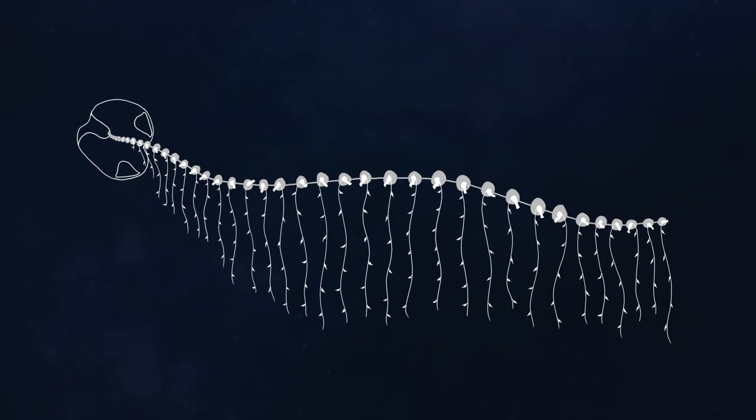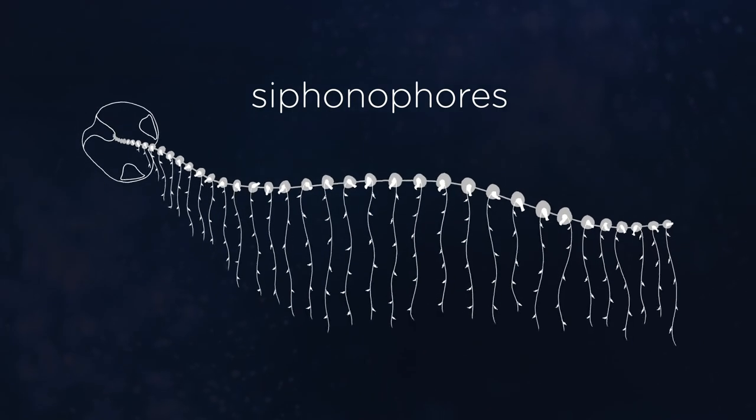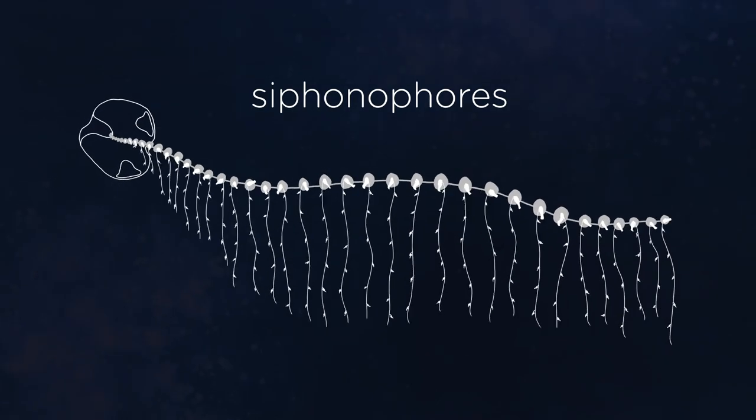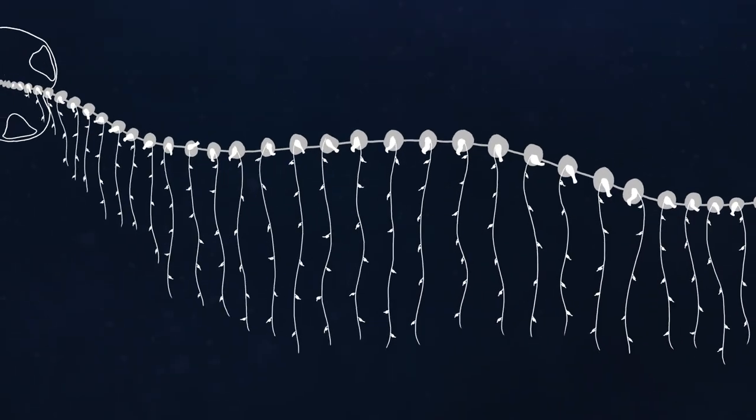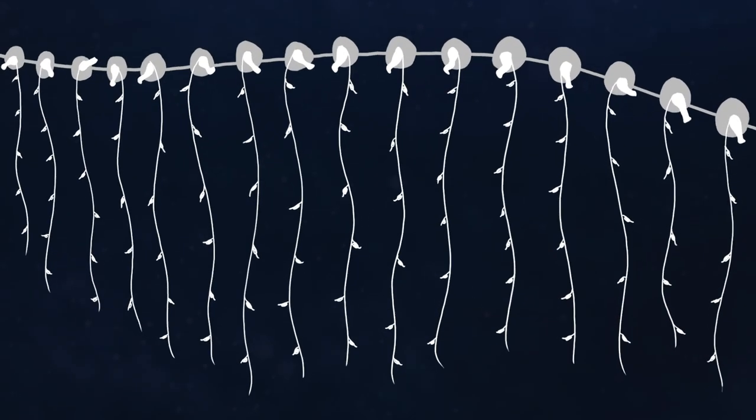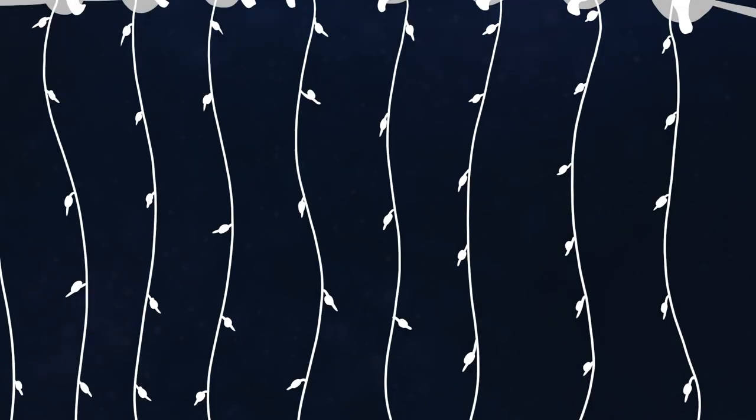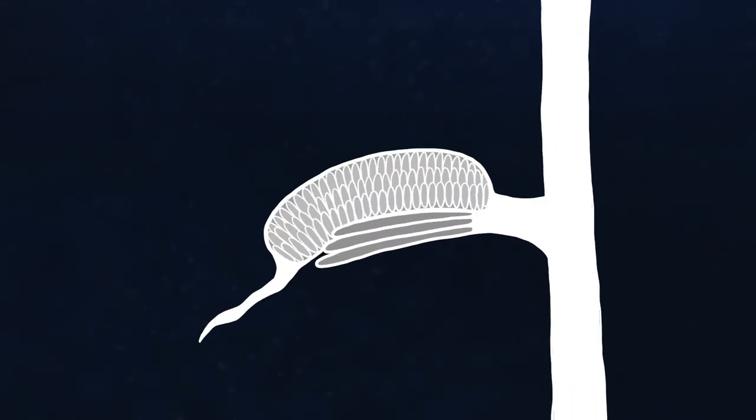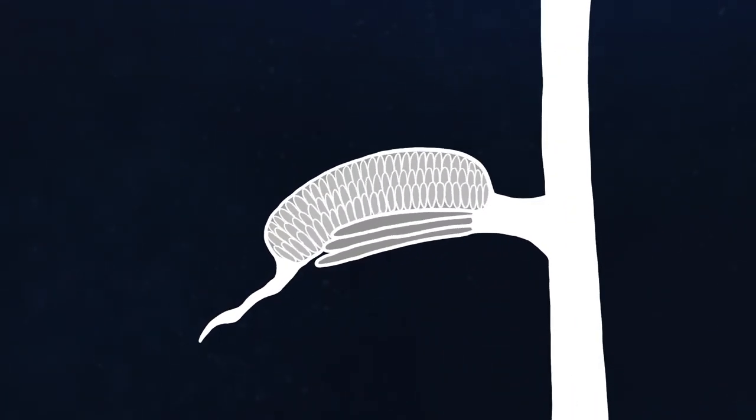Some jellyfish have taken nematocysts to the next level. Siphonophores form long chains of conjoined, specialized bodies that work together as a single animal. Their tentacles carry different types of nematocysts packed into batteries. These batteries are loaded in the side branches of the tentacles called tentilla.